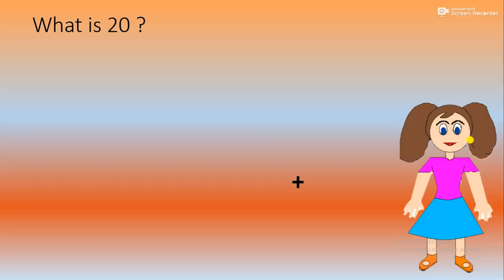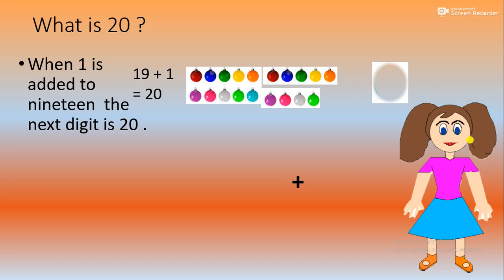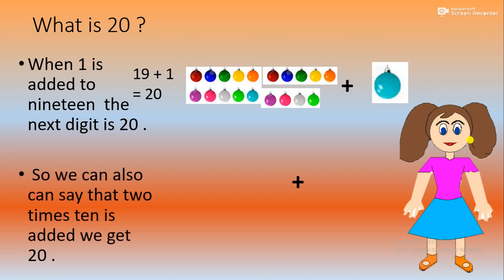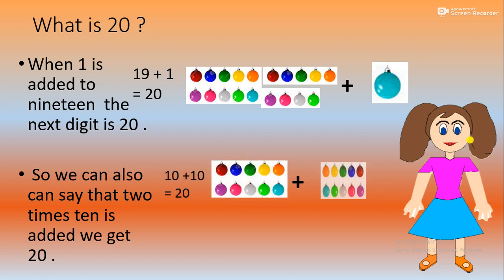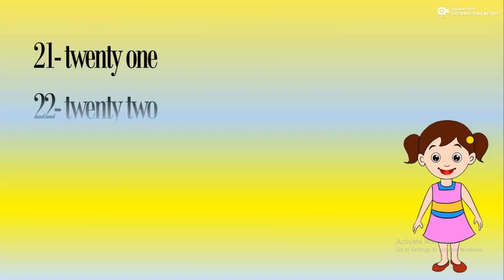What is 20? When 1 is added to 19, the next digit is 20. So, we can also say that 2 times 10 is added, we get 20. T-W-E-N-T-Y-20.